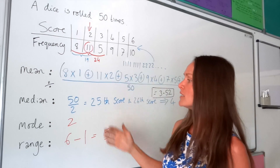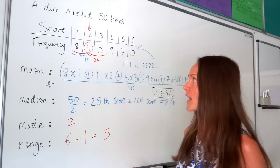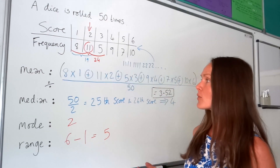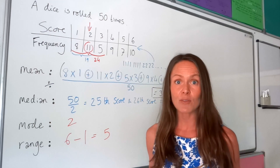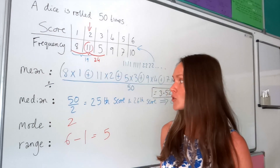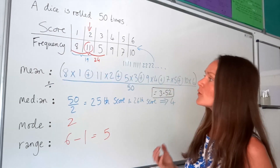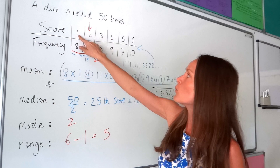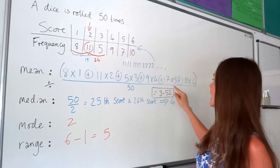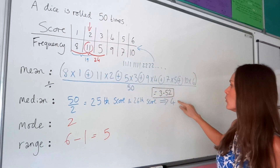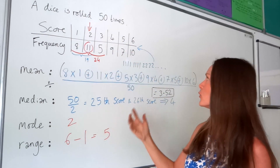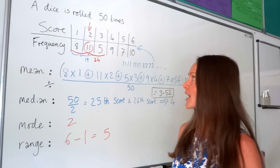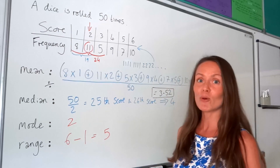So that's mean, median, mode and range from a frequency table. Always remember to check your answers are sensible — all of your averages should fall between 1 and 6, and they all do. I'm going to do one more example to finish.